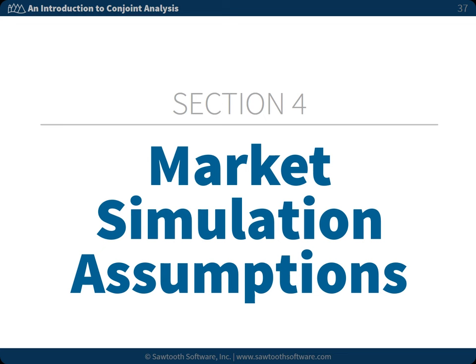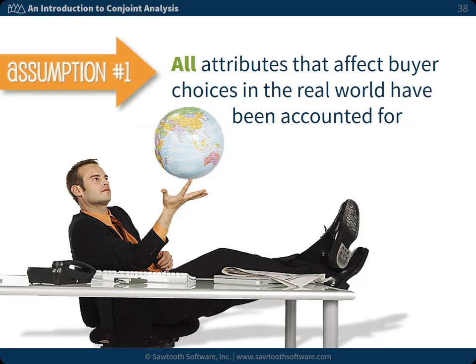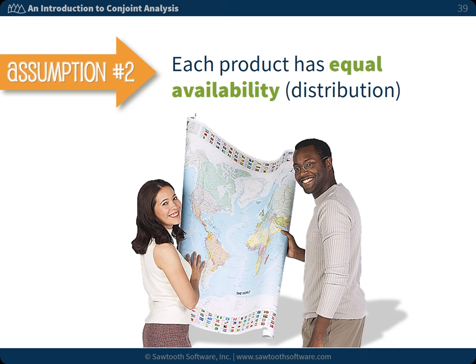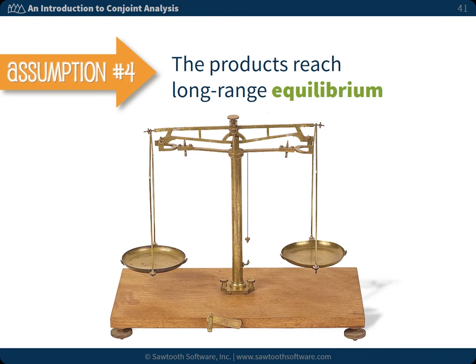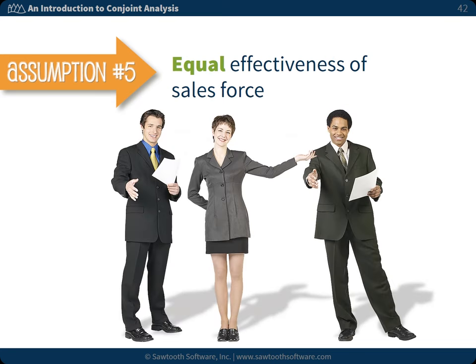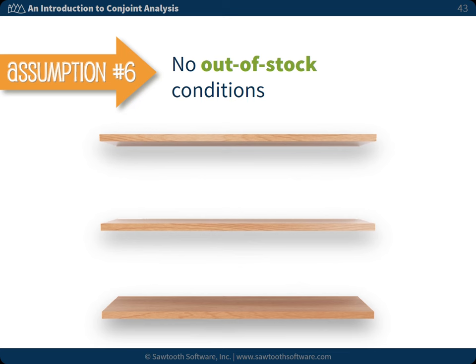Section 4: Market Simulator Assumptions. To interpret the results of the market simulator correctly, we need to be aware of some assumptions underlying conjoint analysis data. First, all attributes that affect buyer choices in the real world have been accounted for. Second, each product has equal availability or distribution across the marketplace. Third, respondents are aware of all products in the market. Fourth, that products have achieved long-range equilibrium. Fifth, the sales forces for the different product alternatives are equally effective. And sixth, you will never have any out-of-stock conditions.